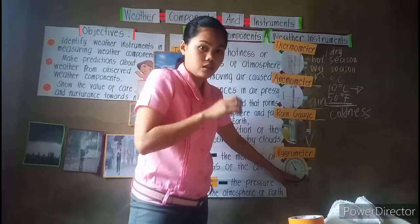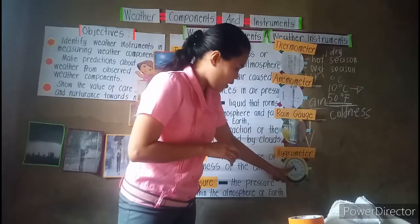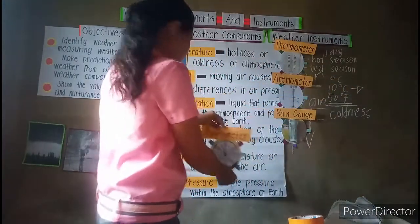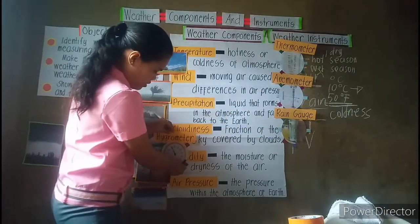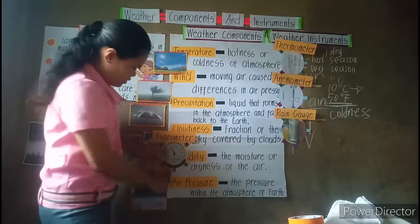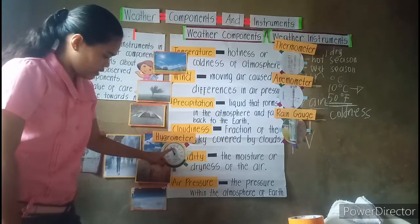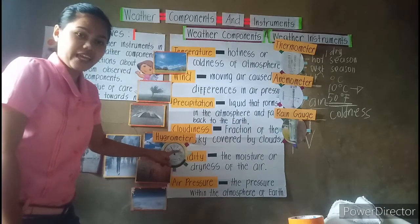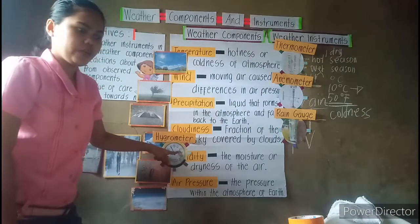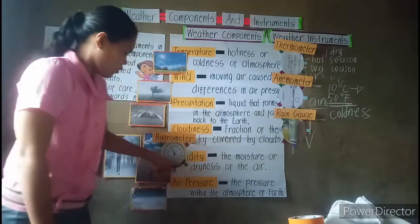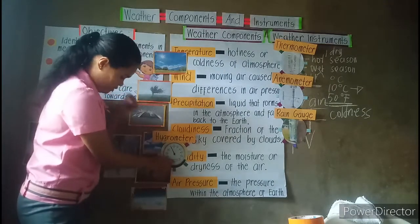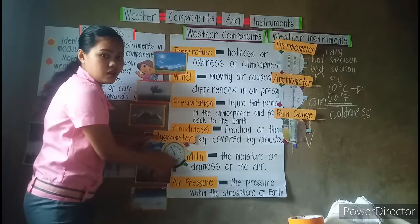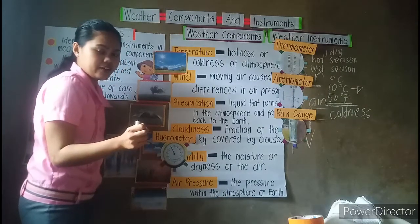This instrument is like a clock with a hand. Once this hand turns here, from 60 to 100, it means that the humidity is high. What is the indicator if the humidity is high? We will have dry season. But once this arrow turns to a lower position, it is an indication that the humidity is low, so we will have wet season.